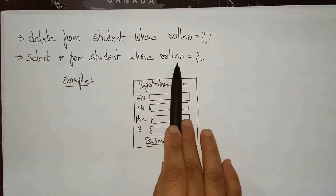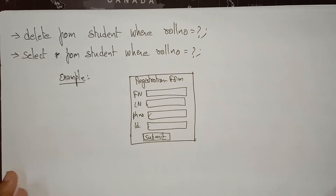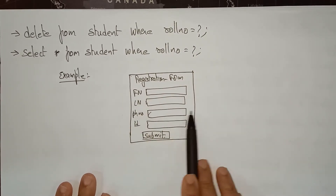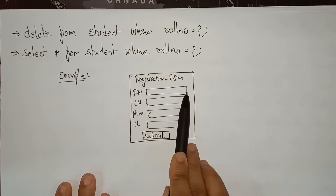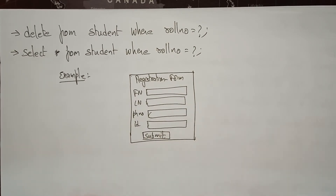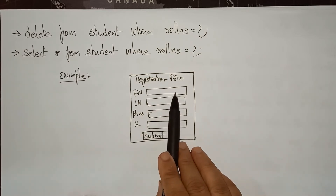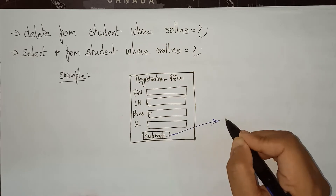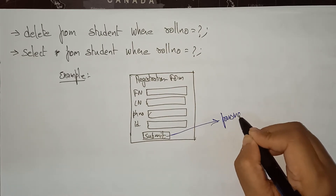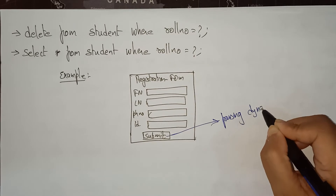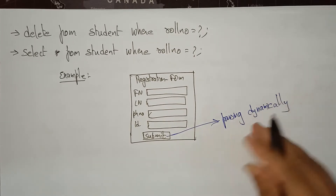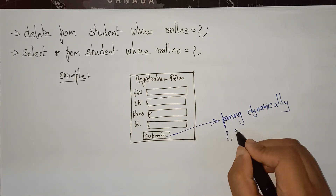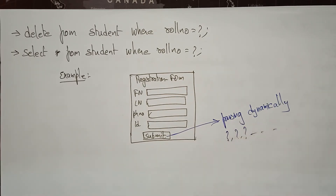Similarly, 'select * from student where row_number = ?'. For example, you all know registration forms — the form is static with fields like first name, last name, phone number, ID. Each person enters their own name, phone number, and ID. Whenever they click submit, it passes a dynamic query. Everything is passed dynamically, so we keep question marks because you don't know the values in advance.